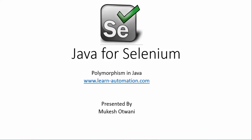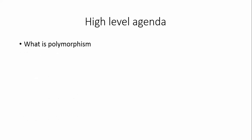Hi everyone, welcome back to another video on Java for Selenium. In this video we will mainly discuss polymorphism in Java. We will cover this topic in two parts because to complete this topic we need inheritance as well. We will discuss what is polymorphism, types of polymorphism, what is a signature, and we will write a program to achieve polymorphism.